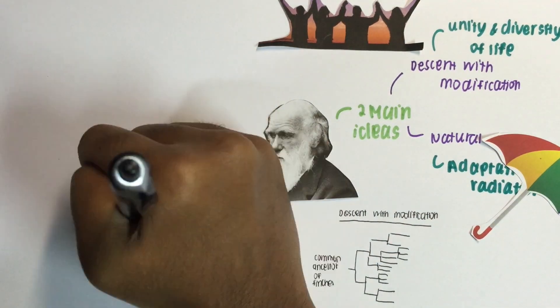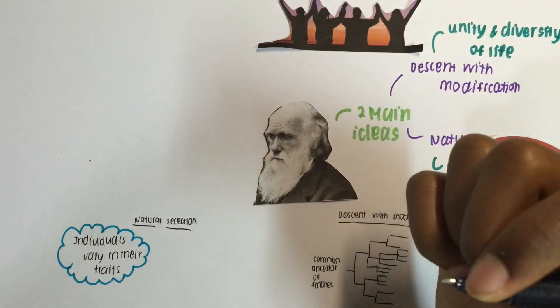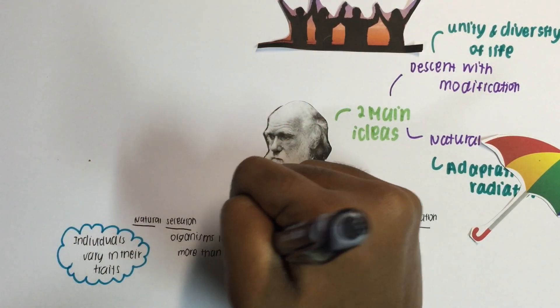Natural selection was further explained using two observations: that organisms vary their traits, and they produce more offspring than what the environment can support.